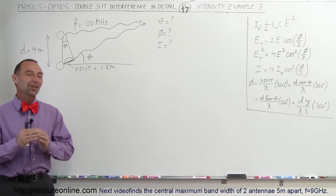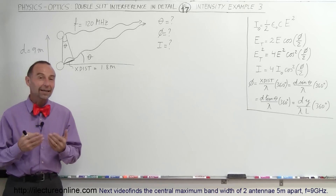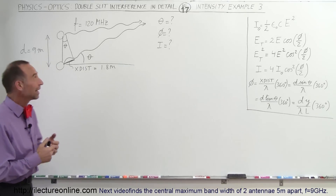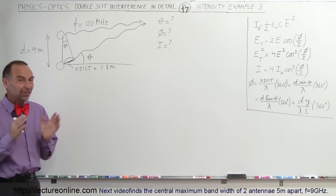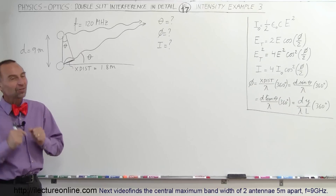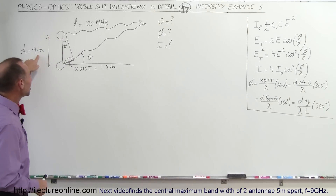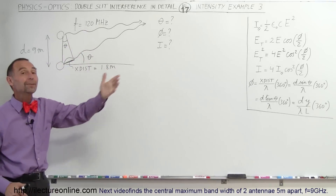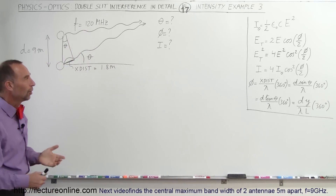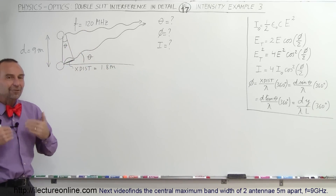Welcome to Electronline. Here's another example of how to apply what we call a double-slit interference pattern on something else — not actually a double-slit. Here we have two antennas that are 9 meters apart and they're broadcasting a radio station at 120 MHz. What will be the interference pattern?